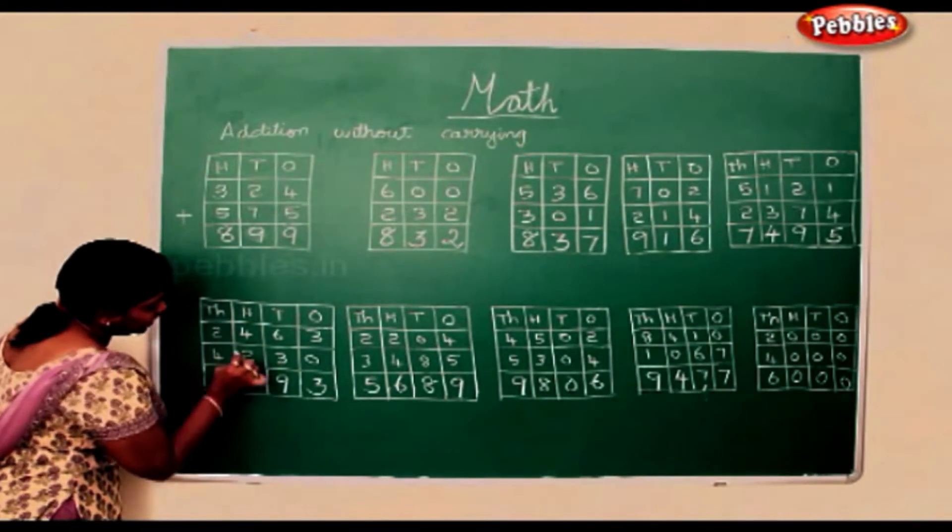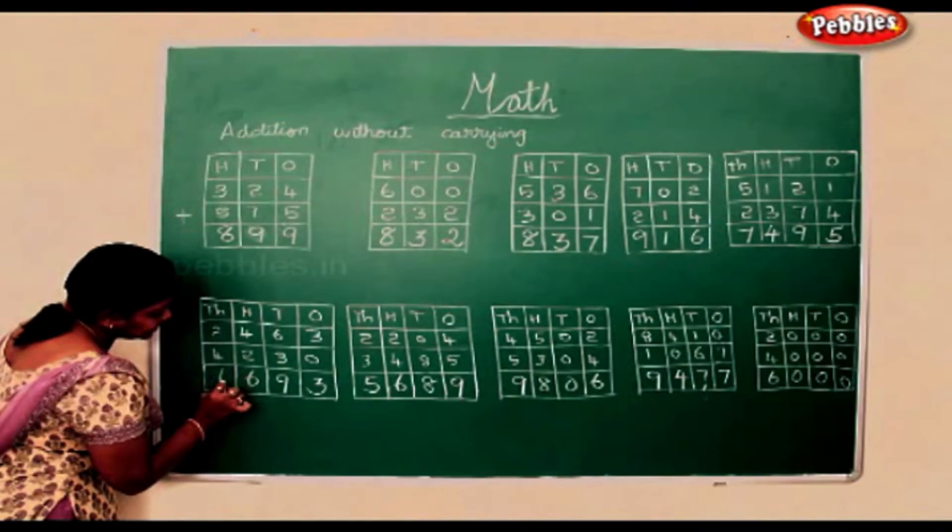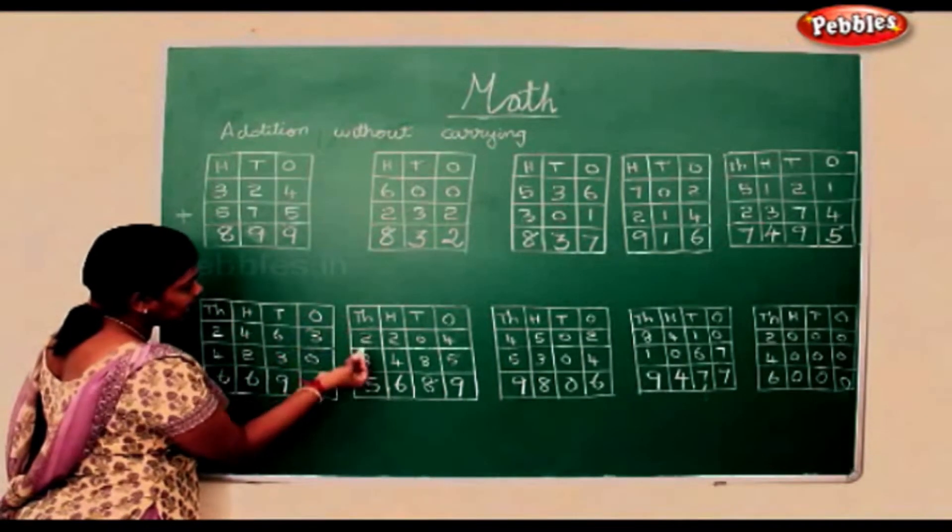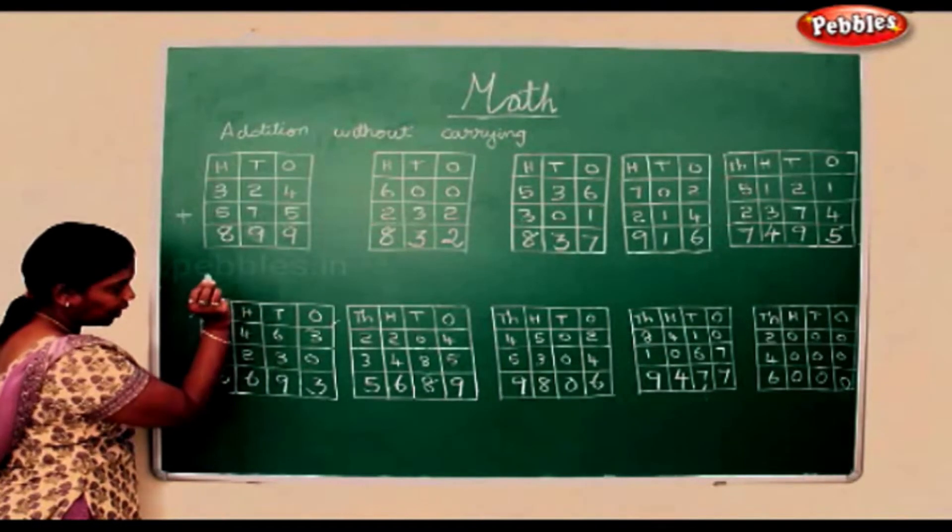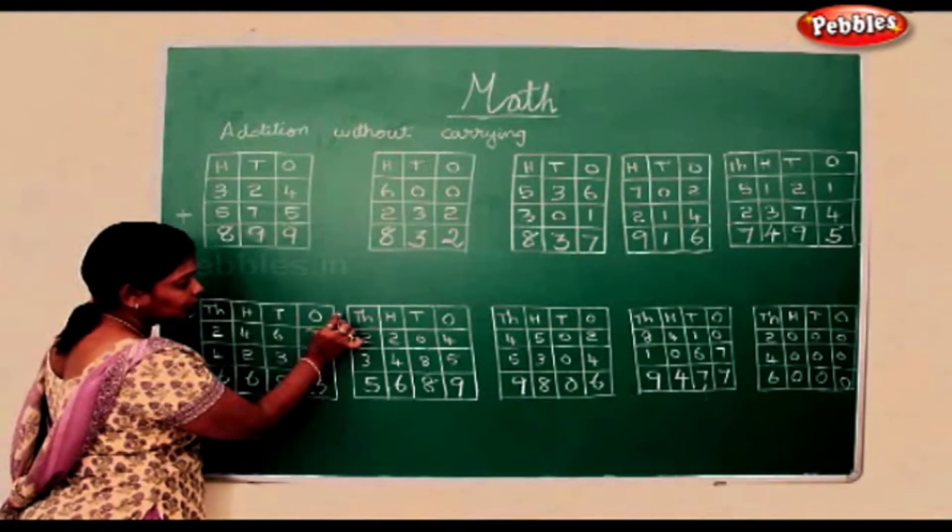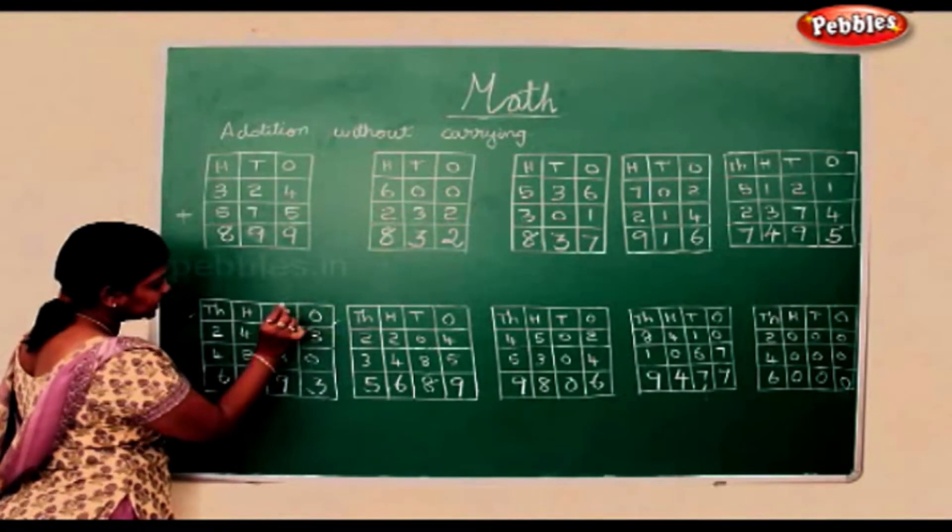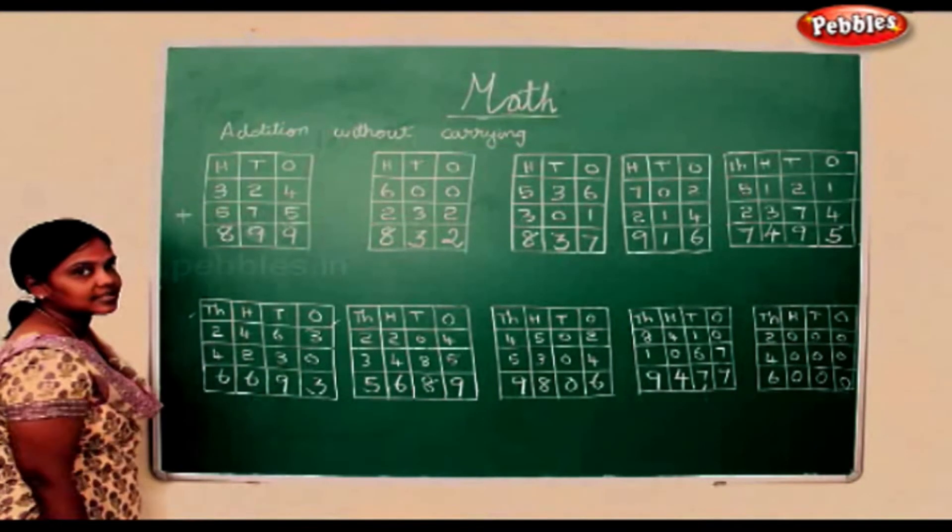2 add 4 is 6. Again if you see, we will start counting only from the 1s, then we go by the 10s, then 100s, and the 1000s.